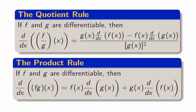The quotient rule says that if functions f and g are differentiable, then the derivative of the quotient of f by g is g times f prime minus f times g prime all over g squared. The quotient rule is more complicated than the product rule in that you need to be aware of the order of operations.